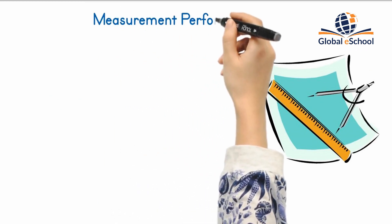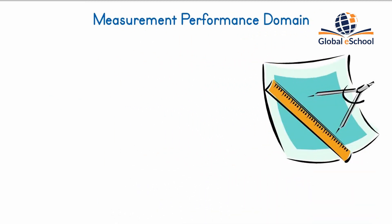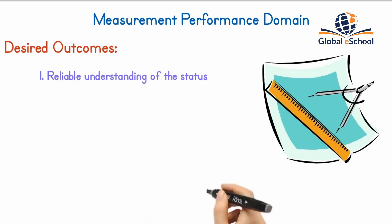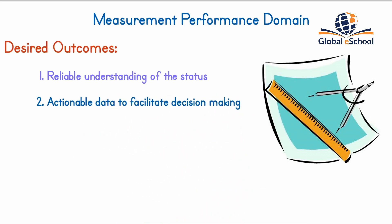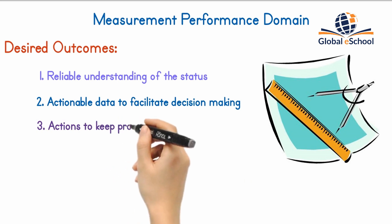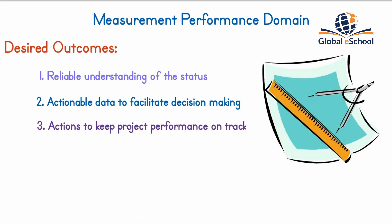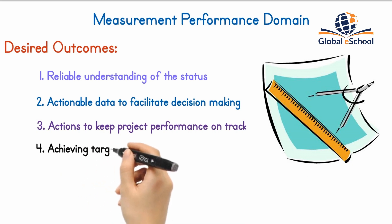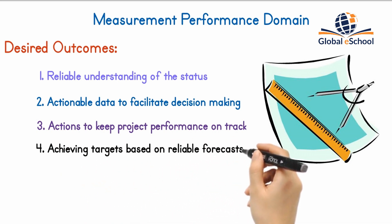The measurement performance domain addresses activities and functions associated with assessing project performance and taking appropriate actions to maintain acceptable performance. Effective execution results in: a reliable understanding of project status, actionable data to facilitate decision making, timely and appropriate actions to keep project performance on track, and achieving targets and generating business value by making informed and timely decisions based on reliable forecasts and evaluations.